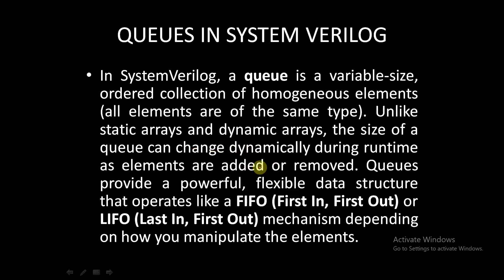We will start with the discussion of queues in SystemVerilog. Basically, a queue is a variable-size ordered collection of homogeneous elements — all the elements are of the same type. Unlike static arrays and dynamic arrays, the size of the queue can change dynamically during runtime as elements are added or removed. Queues provide a powerful, flexible data structure that operates like FIFO (first in, first out) or last in, first out mechanisms depending on how you manipulate the elements.